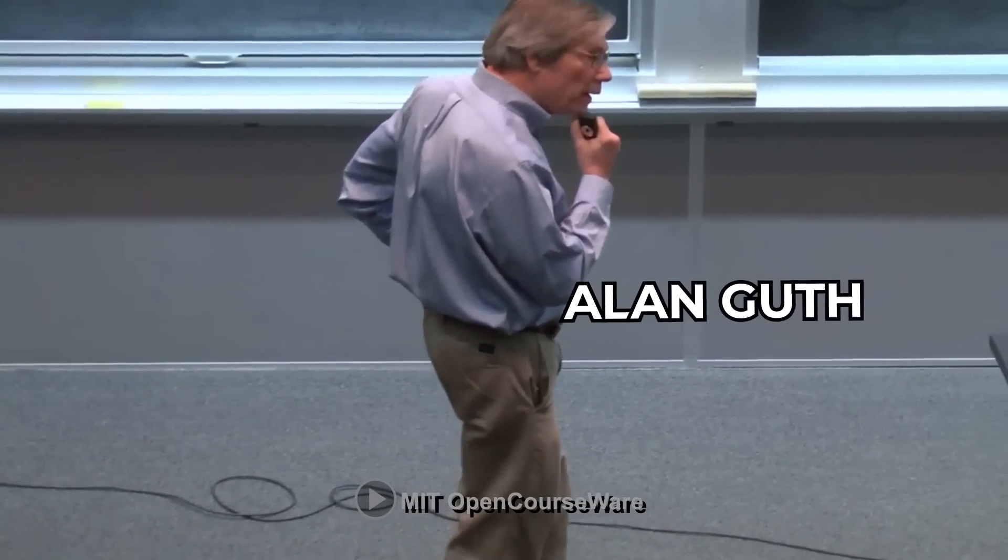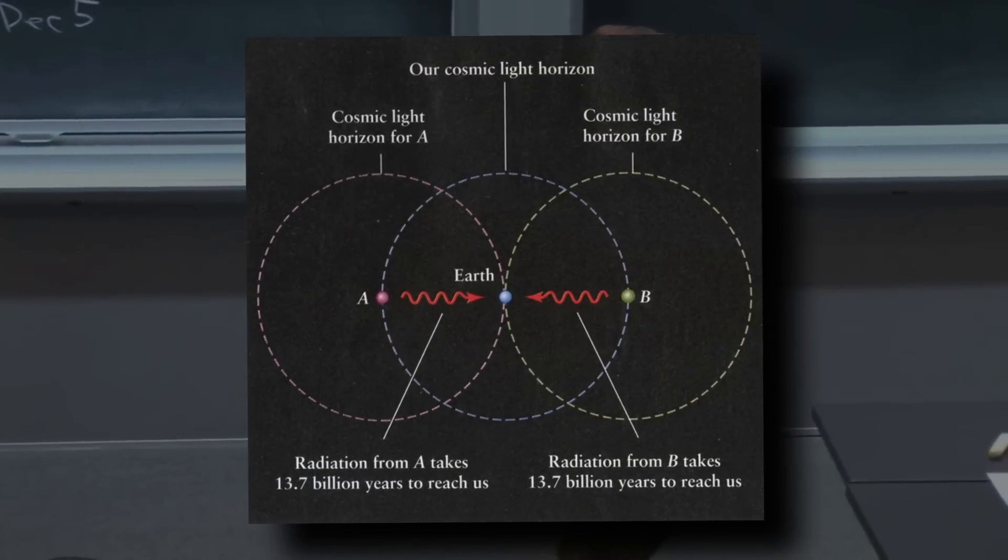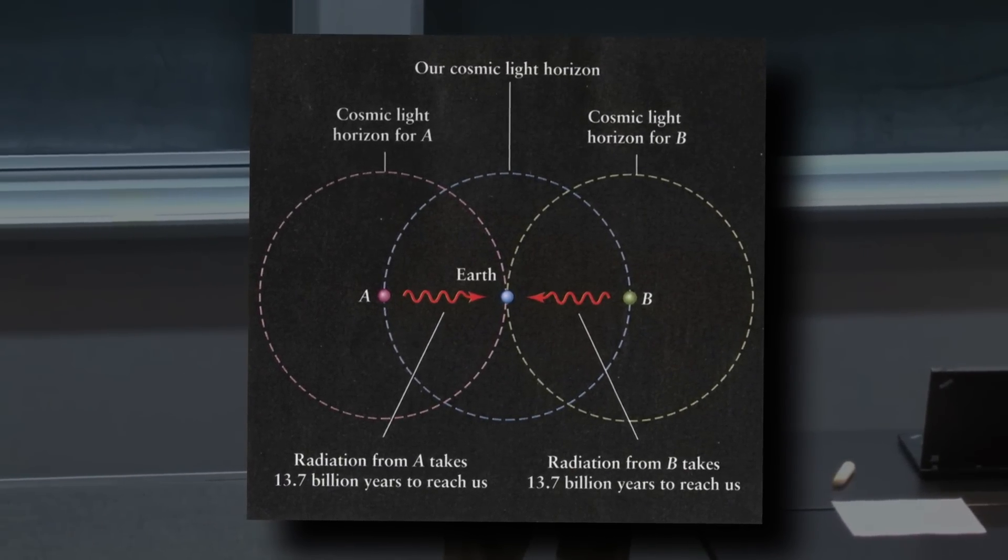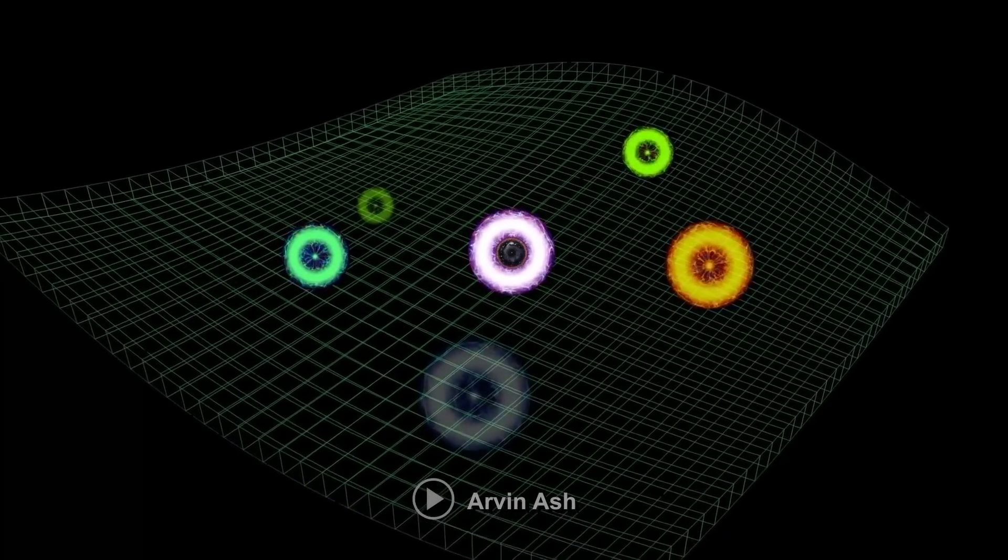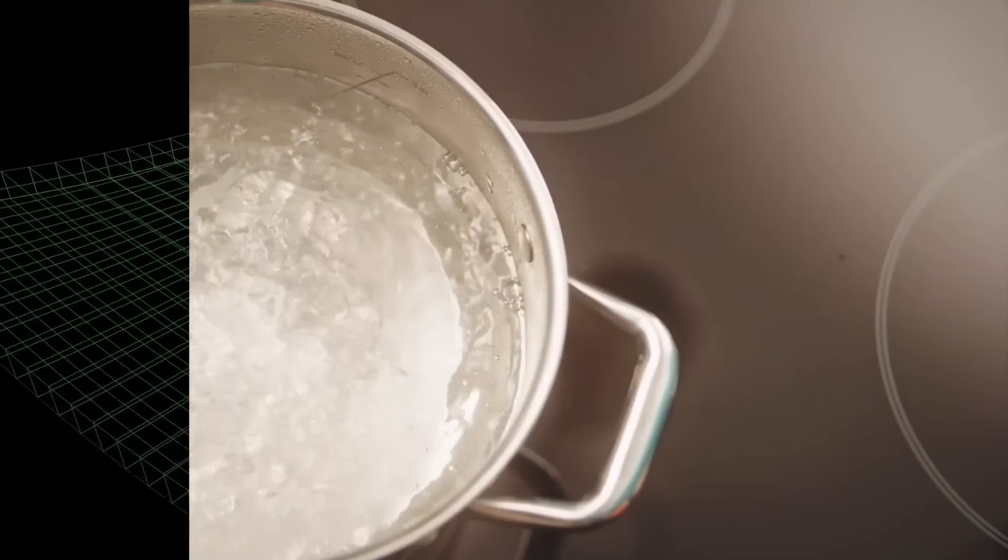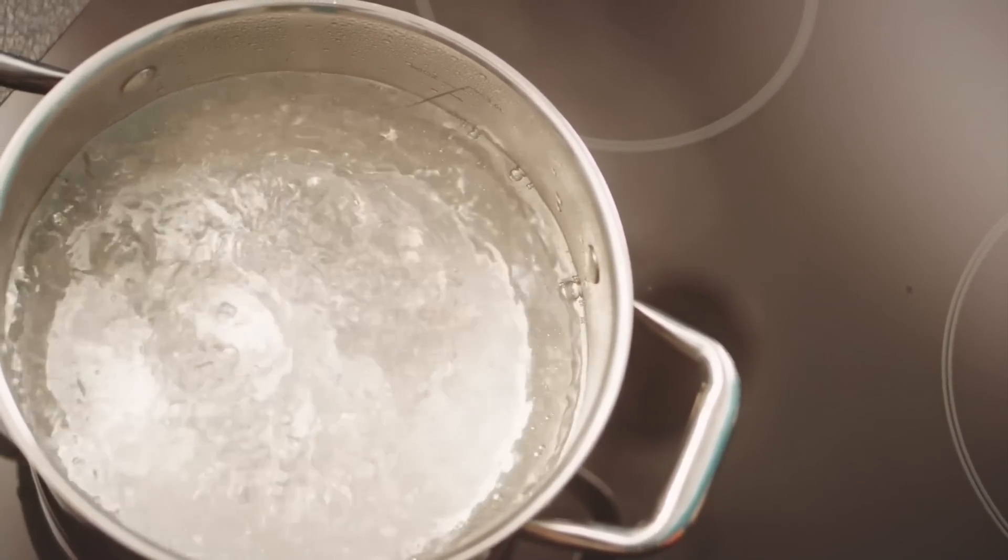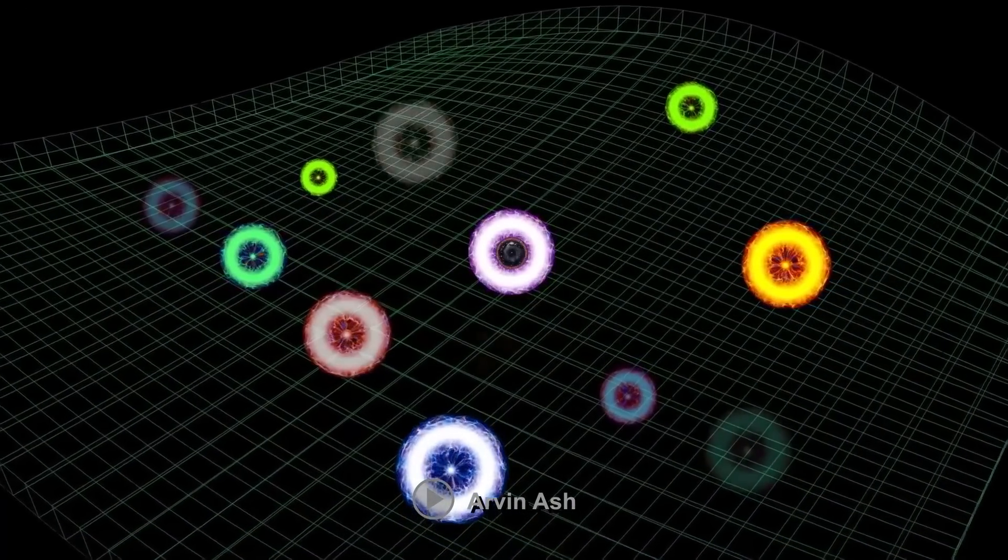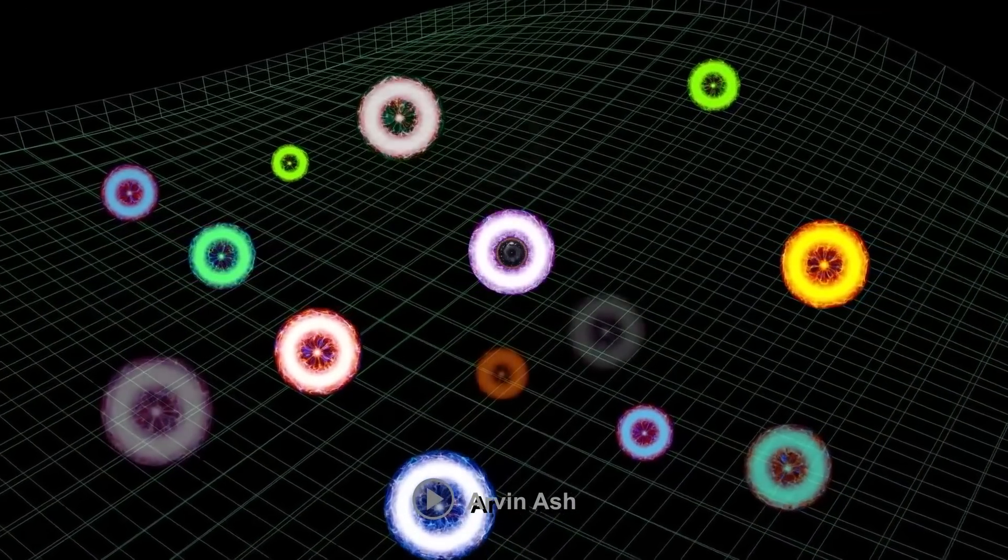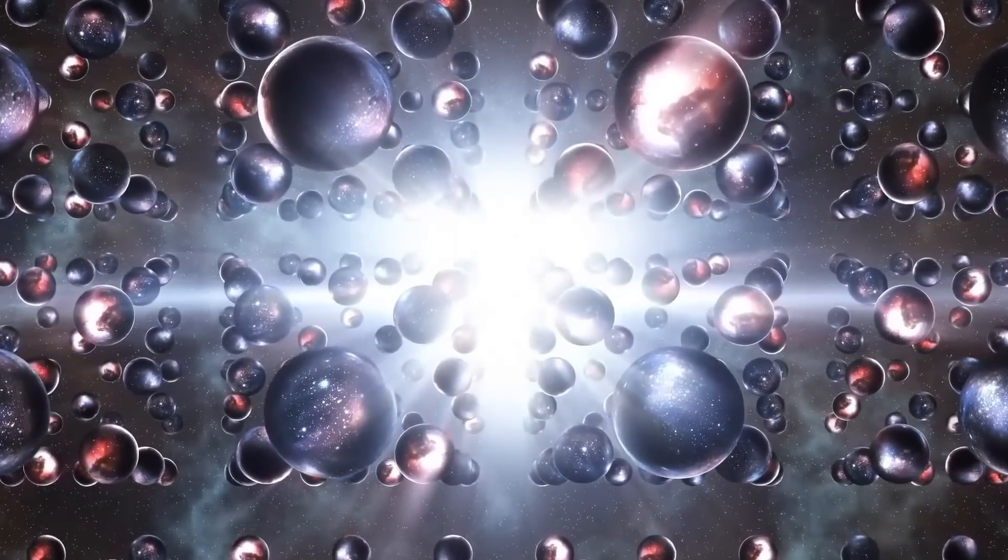The second is what's called Eternal Inflation. Now, this theory, first proposed by physicist Alan Guth in 1979, basically explains the Big Bang as just one among many Big Bangs that originate from a kind of mysterious cosmic soup. Think of it this way: Imagine a large pot of boiling water, where each bubble that rises to the surface represents a universe. In this theory, our universe is just one of these bubbles, while the other bubbles represent other universes.